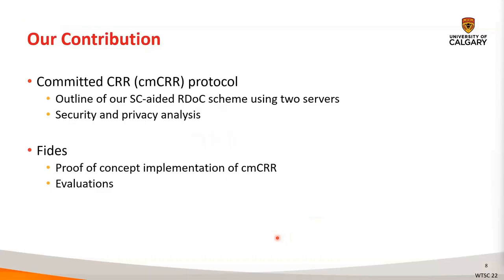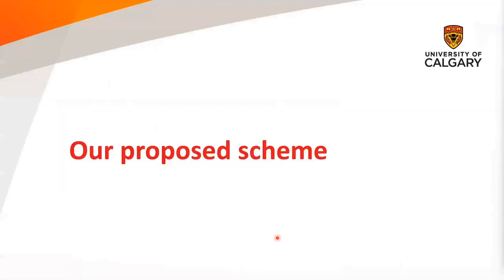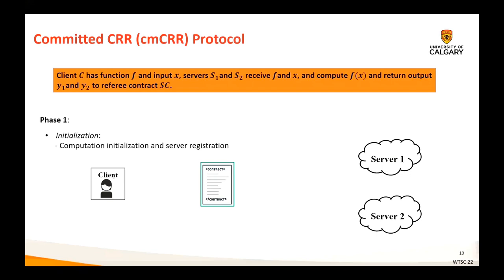In this work, we propose a new modified version of CRR that we call CMCRR, or committed CRR, that reduces the number of computations of the smart contract compared to SCCRR, and implements a system FIDIS, which is a verifiable computation service that uses CMCRR as the underlying protocol over the Ethereum blockchain. Our proposed CMCRR protocol is a smart contract-based referred delegation of computation scheme that uses a smart contract as a referee, which interacts with a client C, two servers S1 and S2, and ensures correctness and detection of misbehaviors.